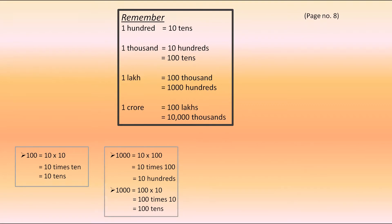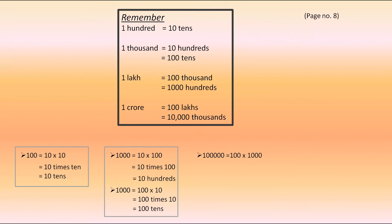The next point says that 1 lakh is equal to 1,00,000, which is equal to 1000 hundreds. As you all know, 1 lakh is equal to 100 into 1000. So it can be said that 100 times 1000, which means we can say 1 lakh is equal to 100 thousands.